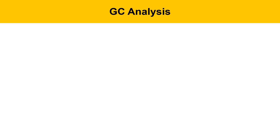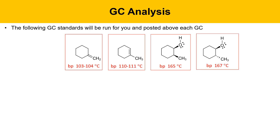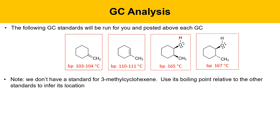The product mixture will be analyzed by GC. GC standards of the relevant molecules will be run and posted above each gas chromatograph. Note: we don't have a standard for 3-methyl cyclohexene — it's not commercially available — so you'll use the boiling point of that species relative to the other standards to infer its location.